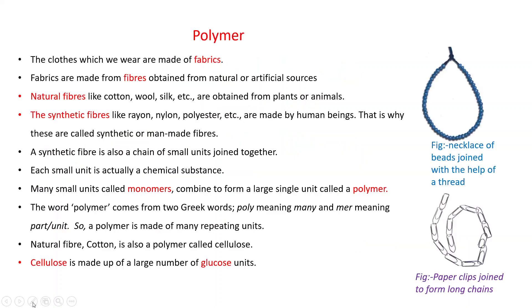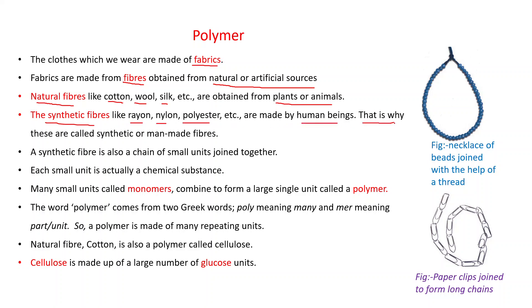Let us see one by one. First of all, what is the meaning of polymer? The clothes which we wear are made of fabrics, and fabrics are made from fibers obtained from natural or artificial sources. Natural fibers like cotton, wool, silk are obtained from plants or animals. Synthetic fibers like rayon, nylon, polyester are made by human beings, that is why these are called synthetic or man-made fibers.